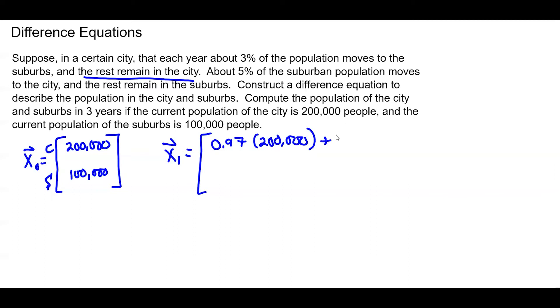And then we're also going to add the new people that come in from the suburbs. So it says 5% of the suburban population moves to the city. So I'm going to add 5% of the suburbs. And that is the city population after one year.